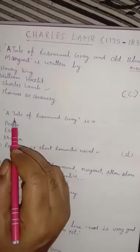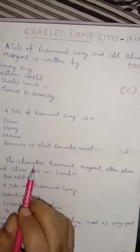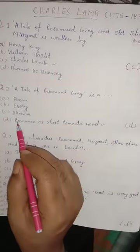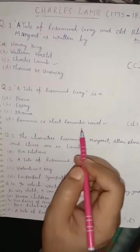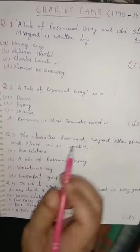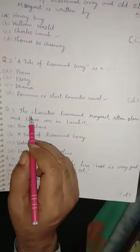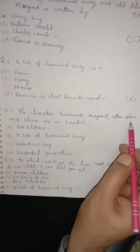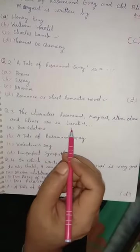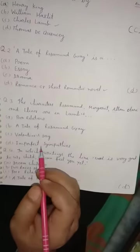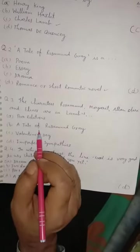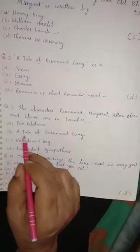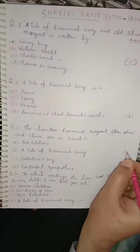Question 2. 'A Tale of Rosamund Gray' is a... In this question, he is talking about genre. Option D is correct — Romance, or short romantic novel. Question 3. The characters Rosamund, Margaret, Alan Clare, and Eleanor are in Lamb's — in which creation are these characters found? The right answer is 'A Tale of Rosamund Gray,' so option B is correct.